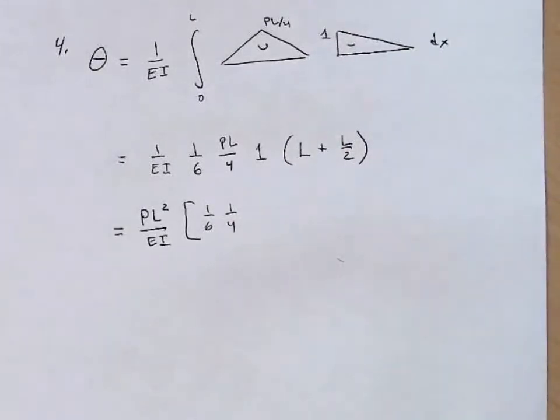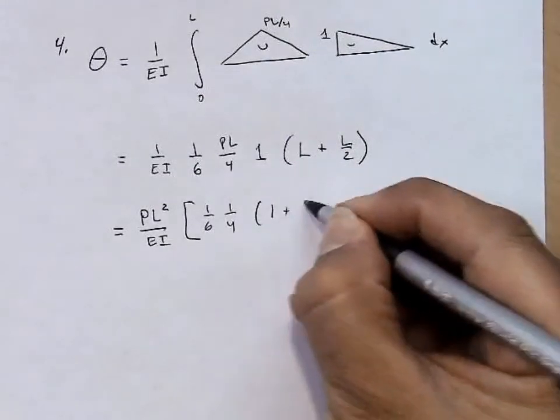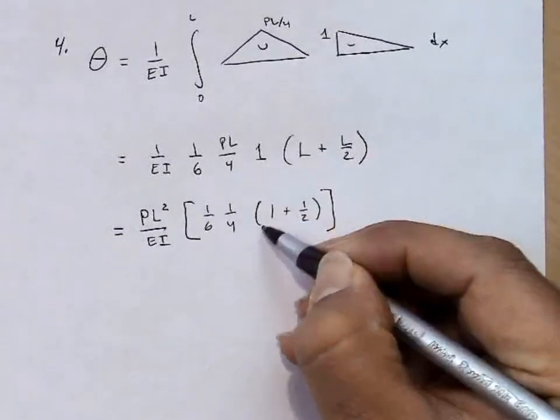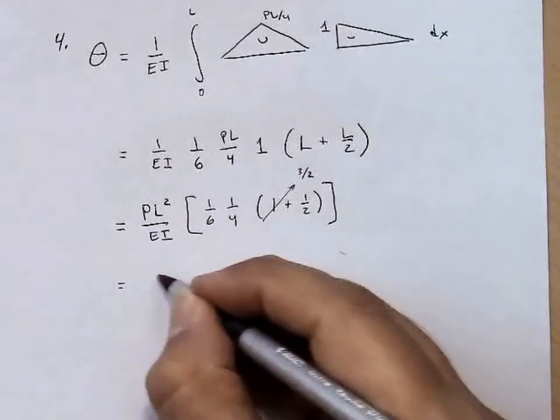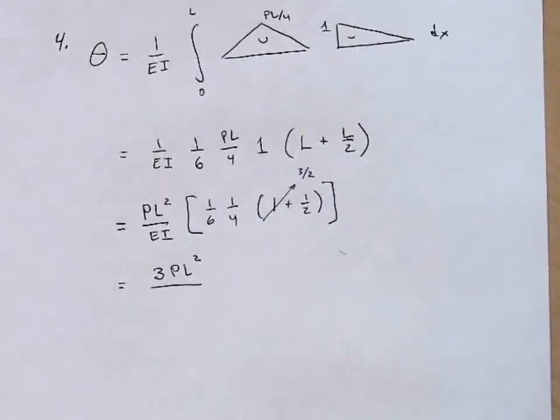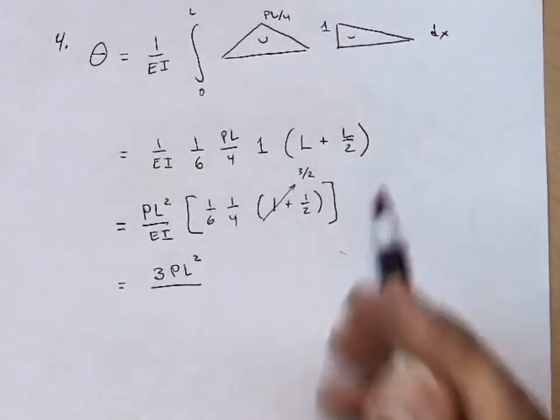That's the nice thing about the unit load method. The 1 just kind of falls out. And I have a 1 plus 1 half here. This we can also see as 3 halves. So then we have 3 PL squared over 6 times 4 is 24 times 2.